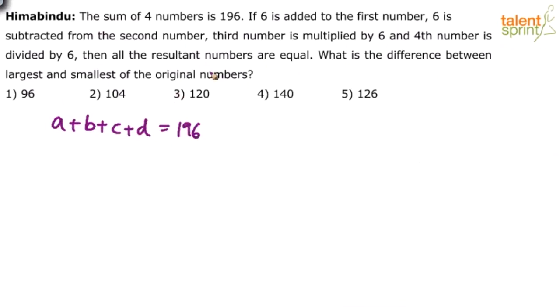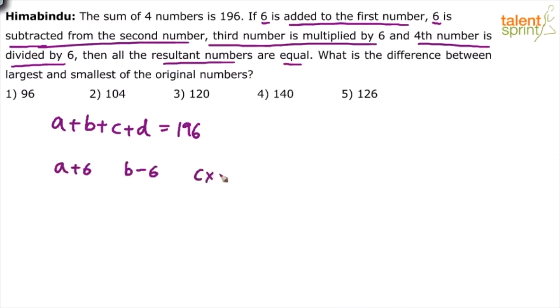Now the next part is interesting. It says add 6 to the first number, 6 is subtracted from the second number. The third number is multiplied by 6 and the fourth number is divided by 6. In this process, we find that all the resultant numbers are same. All the resultant numbers are equal.